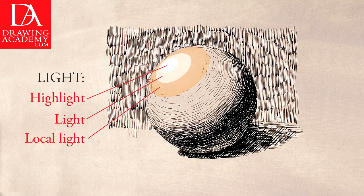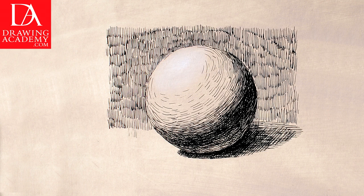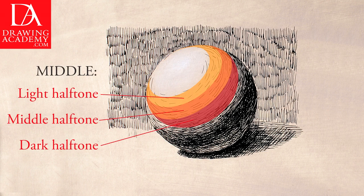In turn, the light can be subdivided into highlight, light, and local light. Middle tone values are light halftone, middle halftone, and dark halftone.